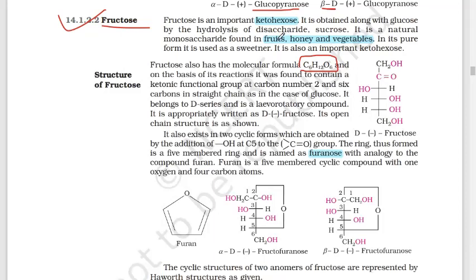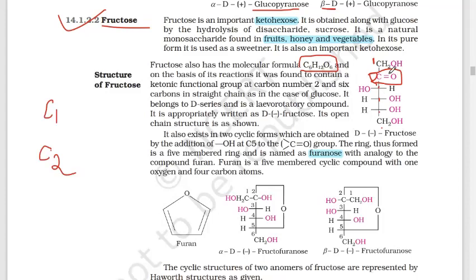The functional groups are different: glucose has an aldehyde group at carbon number one, whereas fructose has a ketone group at carbon number two. You can see the fructose structure numbered 1 through 6, with the ketone functional group at the second position.